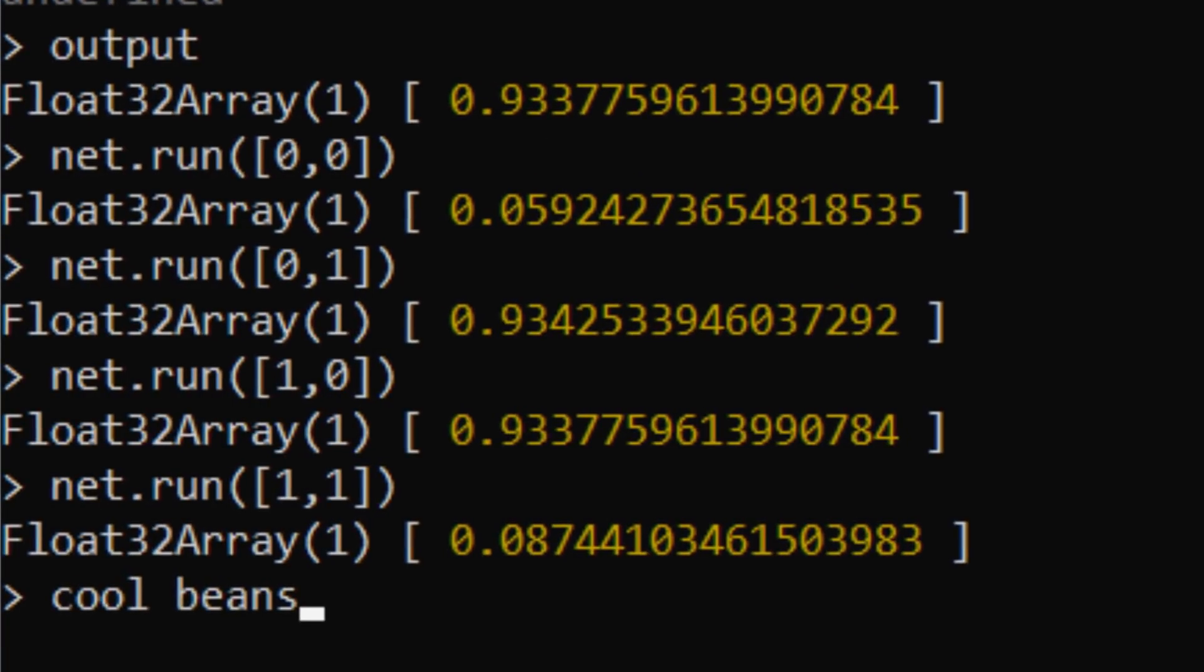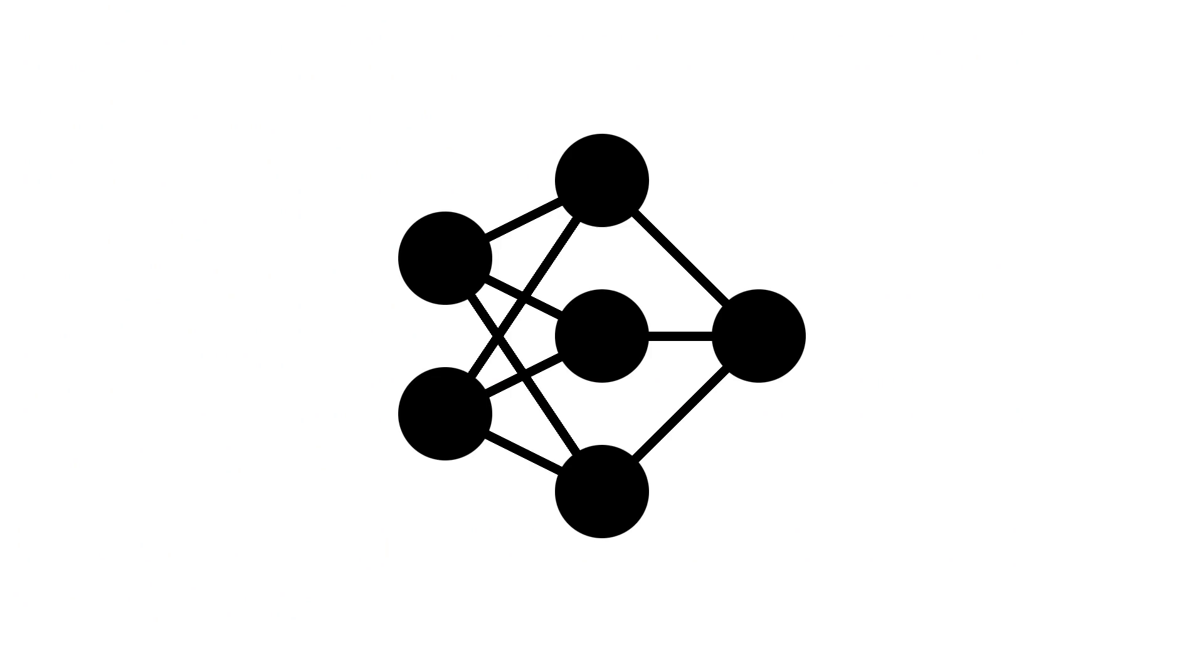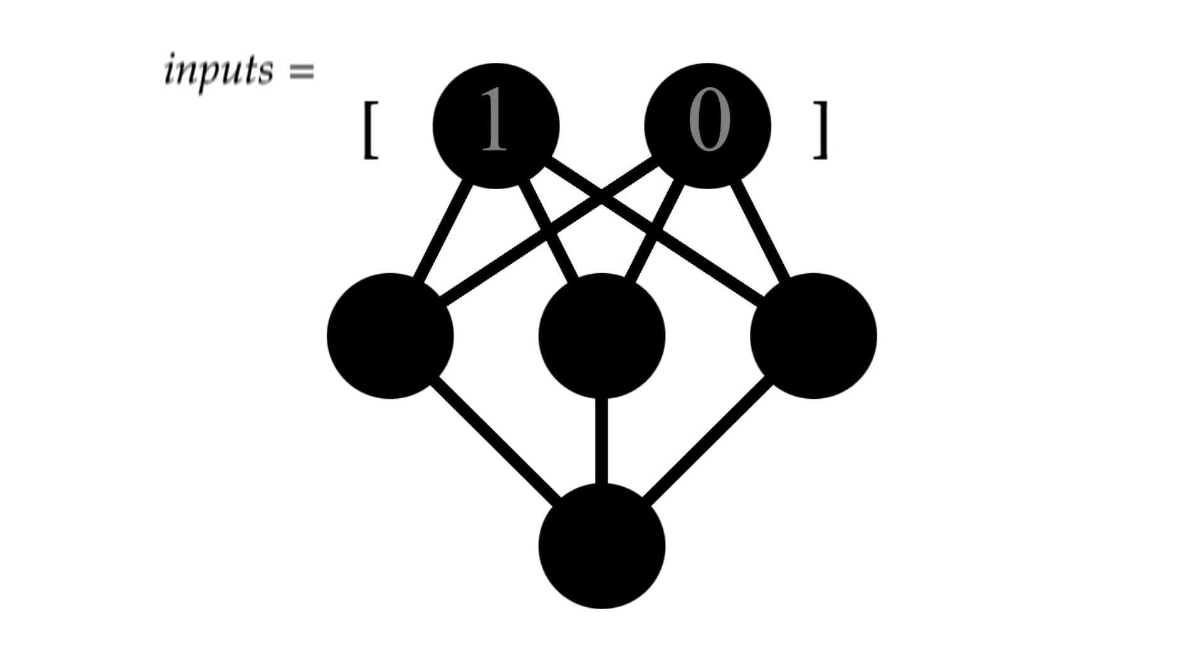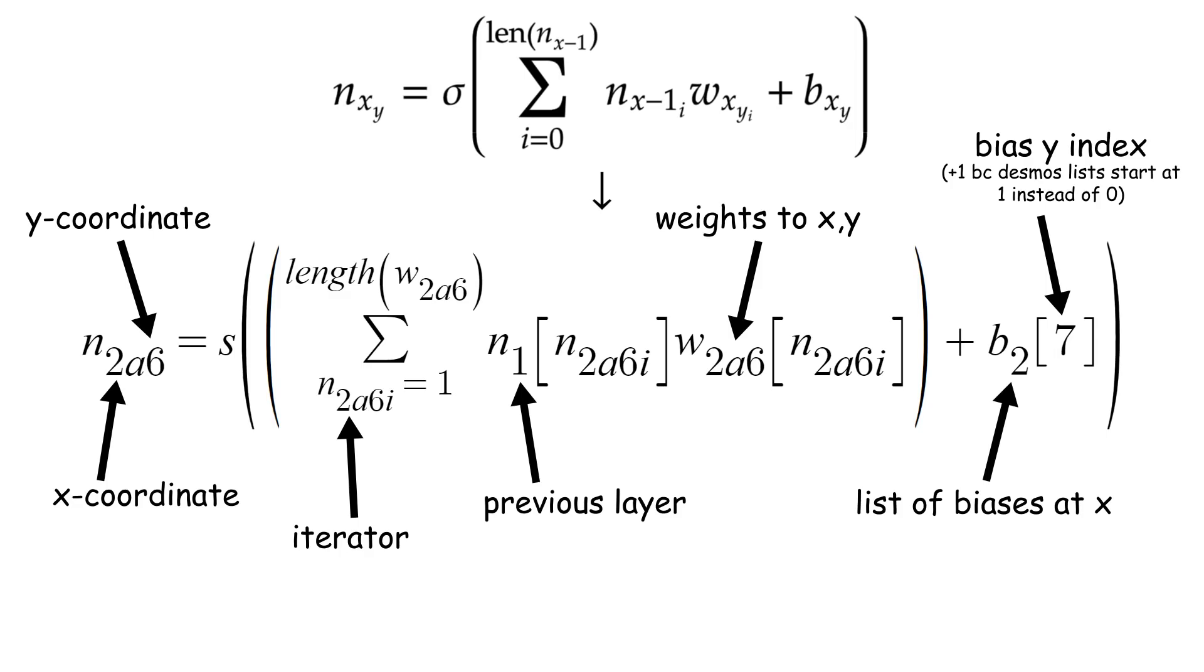Okay, so you have a trained network now that can fairly accurately mimic an XOR gate. To translate this to Desmos, we can have a list that stores our input, and a list for every neuron to define their biases at that certain point. We can then represent each neuron as a variable based on the expression we previously discussed until we reach the output layer.